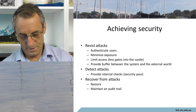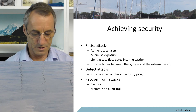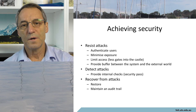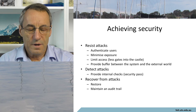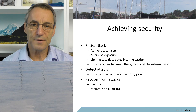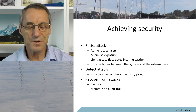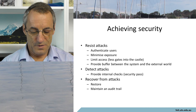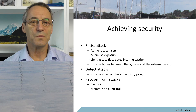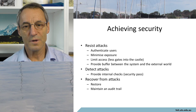Achieving security — the first thing you have to do is resist attacks. So things like authenticating users, minimizing exposures, limiting access, and providing a buffer between the system and the external world. Some attacks are going to get through, so we want to be able to detect an attack when it's happening. And even some of those are going to succeed, so we need to recover from attacks. So there are three different things: we resist them, we detect them, and we recover from them.